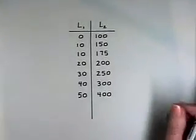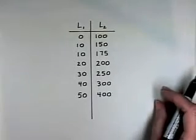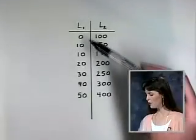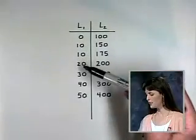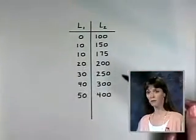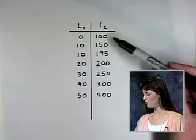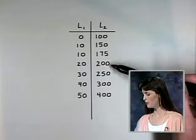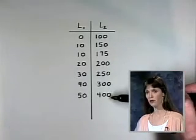Also, we want to consider another example. Here we have two lists of numbers. In list 1, we have the values 0, 10, another 10, 20, 30, 40, and 50. We have in list 2 the values 100, 150, 175, 200, 250, and 300, and 400.